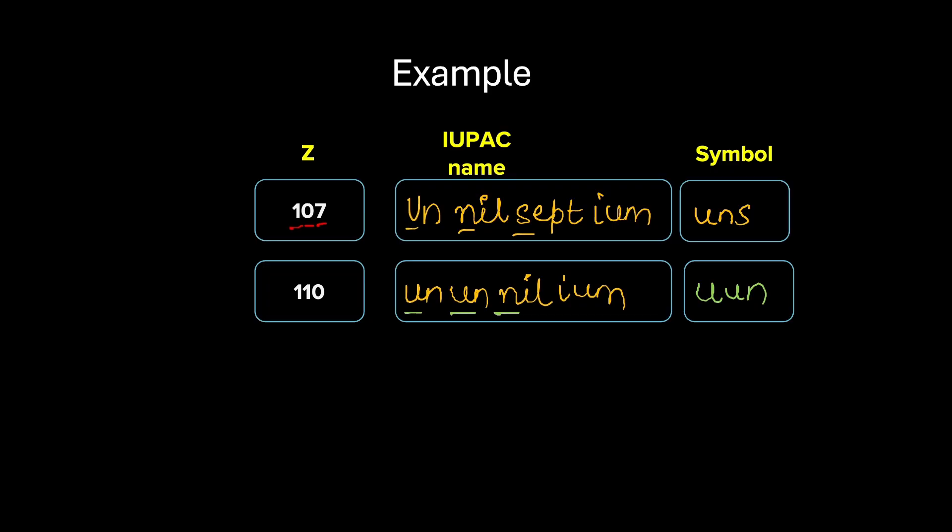The good part is this IUPAC name can be done for any future elements also. Let's take a hypothetical element with atomic number 135. You can pause the video and try attempting IUPAC name and symbol of this future element which is not yet discovered. For 1, we can write un. For 3, we can write tri. For 5, we can write pent. And then we have to add -ium. So, that becomes untripentium. What shall be the symbol? UTP. UTP becomes the symbol of this hypothetical element 135.